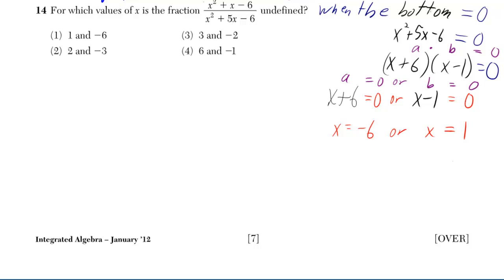Well, what was the bottom? It was x squared plus 5x minus 6. So we've got to know when that's equal to 0.